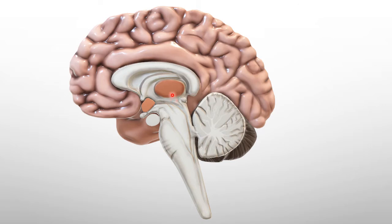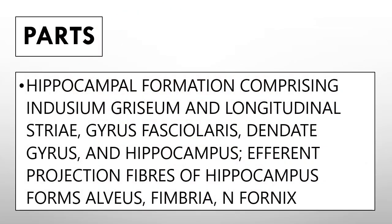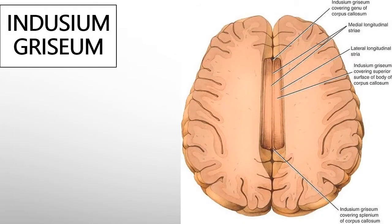The hippocampus is located in the inferior horn of the lateral ventricle. The hippocampal formation comprises indusium griseum, medial and lateral longitudinal striae, gyrus fasciolaris, dentate gyrus, and hippocampus. The efferent projection fibers of the hippocampus form the alveus, fimbria, and fornix. In today's class we are going to discuss the hippocampus; the fornix will be discussed in the next class.